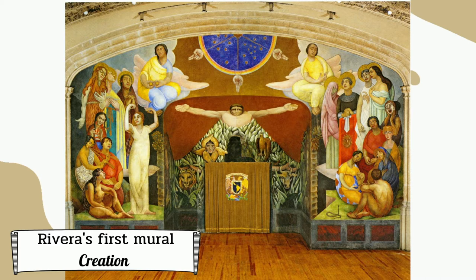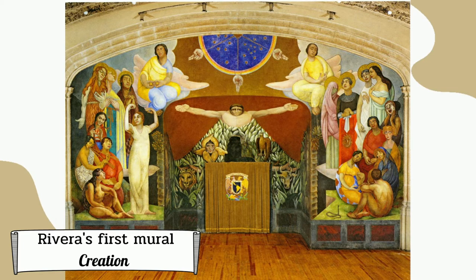On the bottom is Adam and Eve, and over them on both sides are nine muses. On the next level are Christian virtues: the left represents love, hope, and faith; the right represents prudence, justice, and strength; and in the sky is wisdom and science.